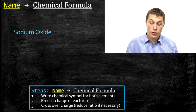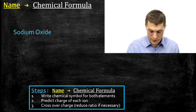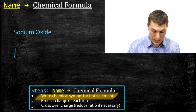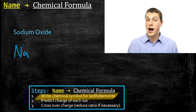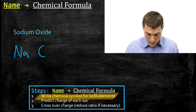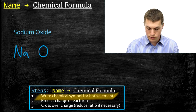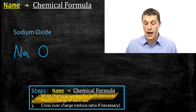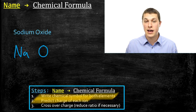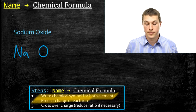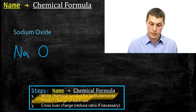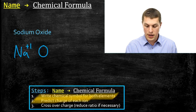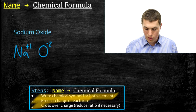Let's take sodium oxide as an example. Step one: write the chemical symbol for both elements. Sodium is Na, and oxide means oxygen, which is O. Step two: predict the charge of each ion — this is covered in the video on predicting the charge of an ion. Na is in the first column, so it forms a positive one ion. Oxygen is on the other side of the periodic table and tends to form a negative two charge.